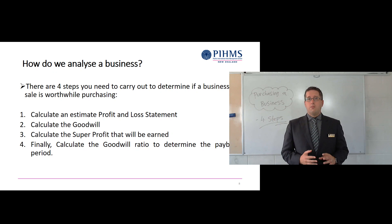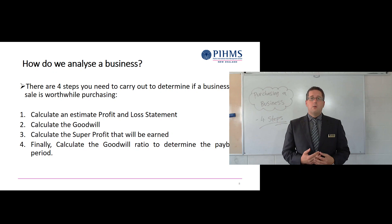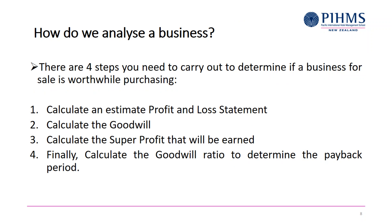These four steps represent just one method of analyzing whether a business is worthwhile purchasing — there are many other methods you could use. So: step one, profit and loss statement; step two, calculating goodwill; step three, calculating super profit; and step four, calculating the goodwill ratio for the payback period.